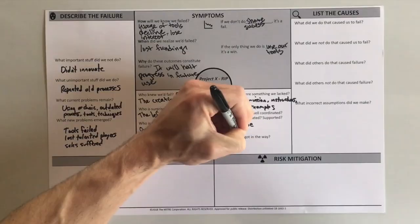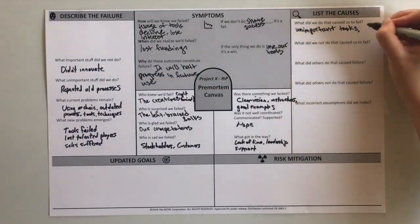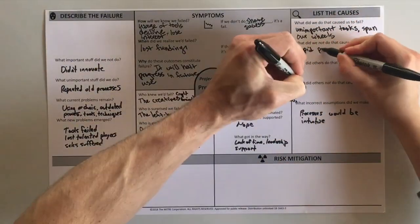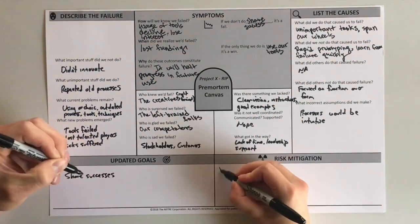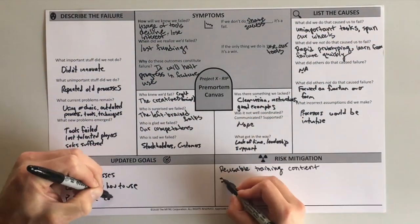Discuss answers with the larger group. When you have described failure, listed the causes, and updated risks and goals, take the appropriate steps to mitigate or prevent future failure from occurring.